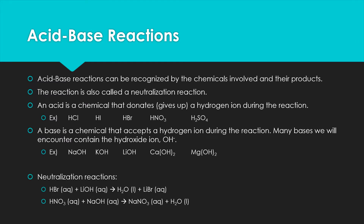We'll start with acid-base reactions. Acid-base reactions can be recognized by the chemicals involved and their products. The reaction is also called a neutralization reaction because when we do an acid and a base, oftentimes they neutralize or create a more neutral pH. An acid is a chemical that donates or gives up a hydrogen ion during the reaction, so to be an acid, you really have to have that hydrogen ion in your formula.